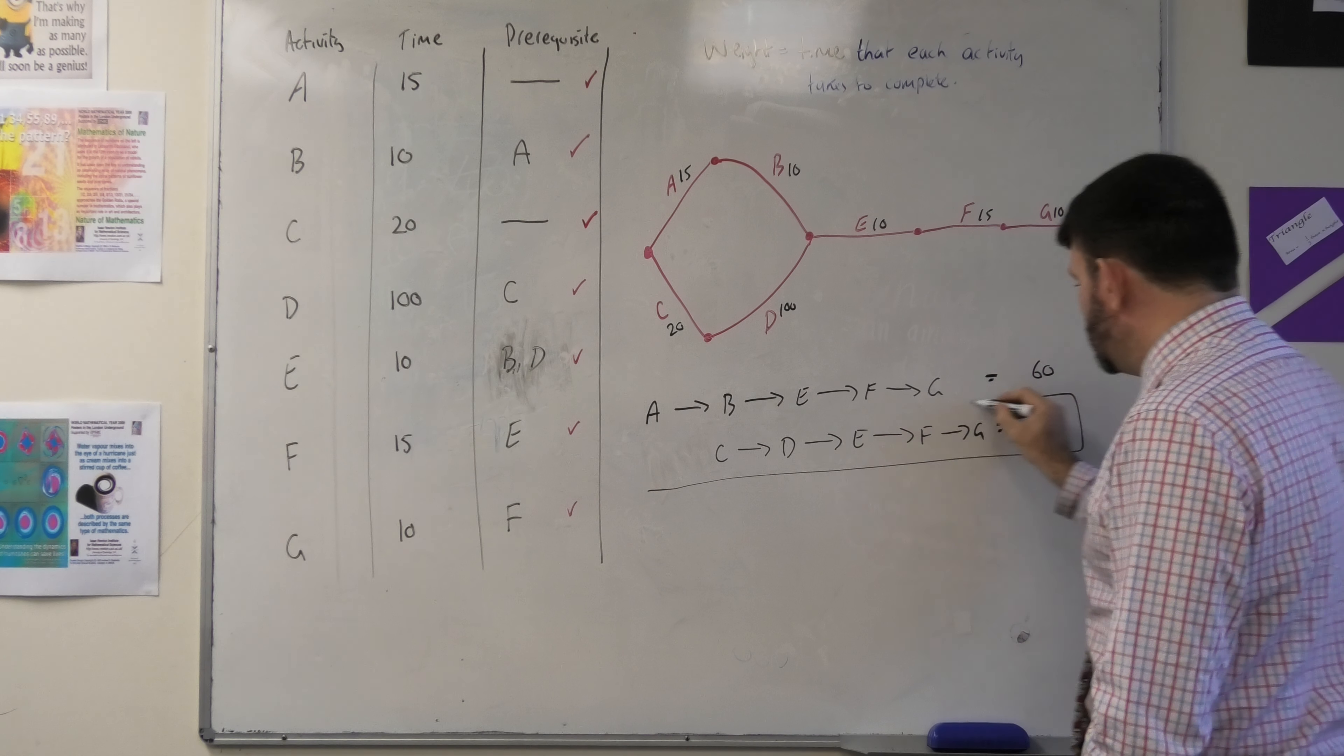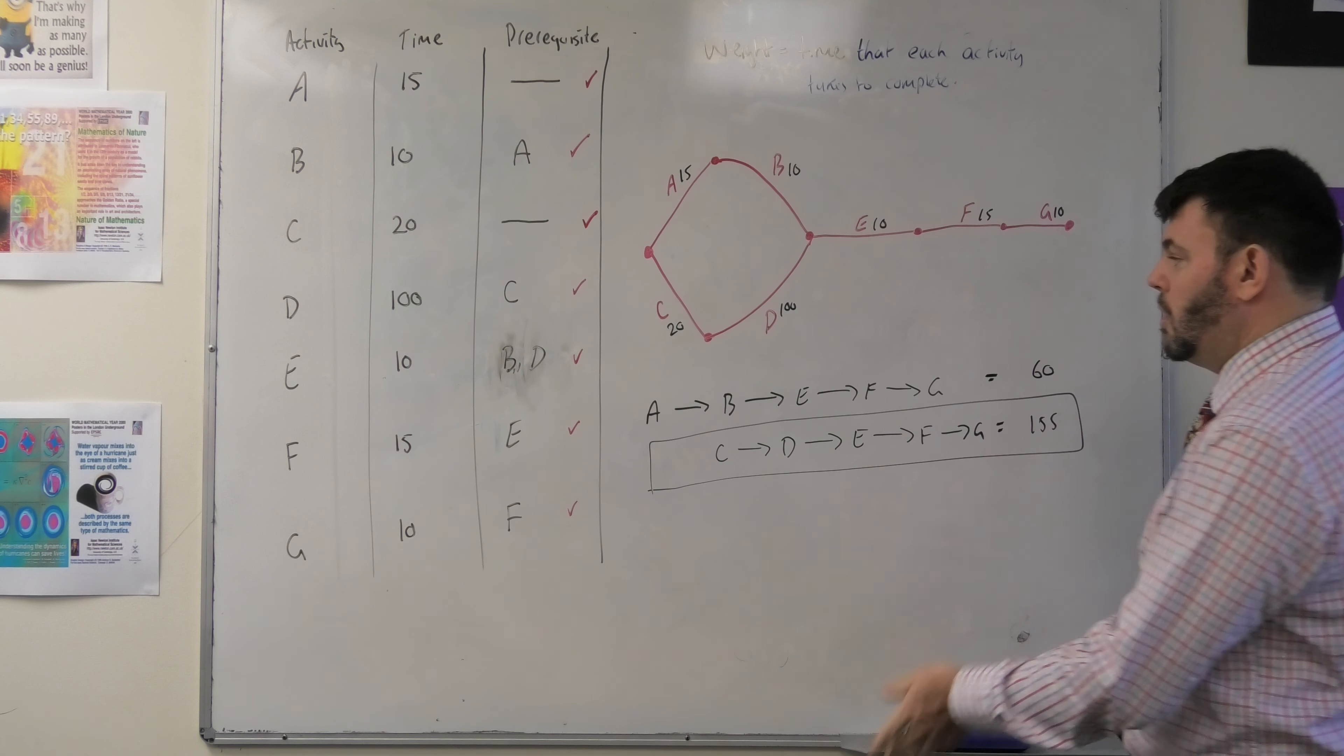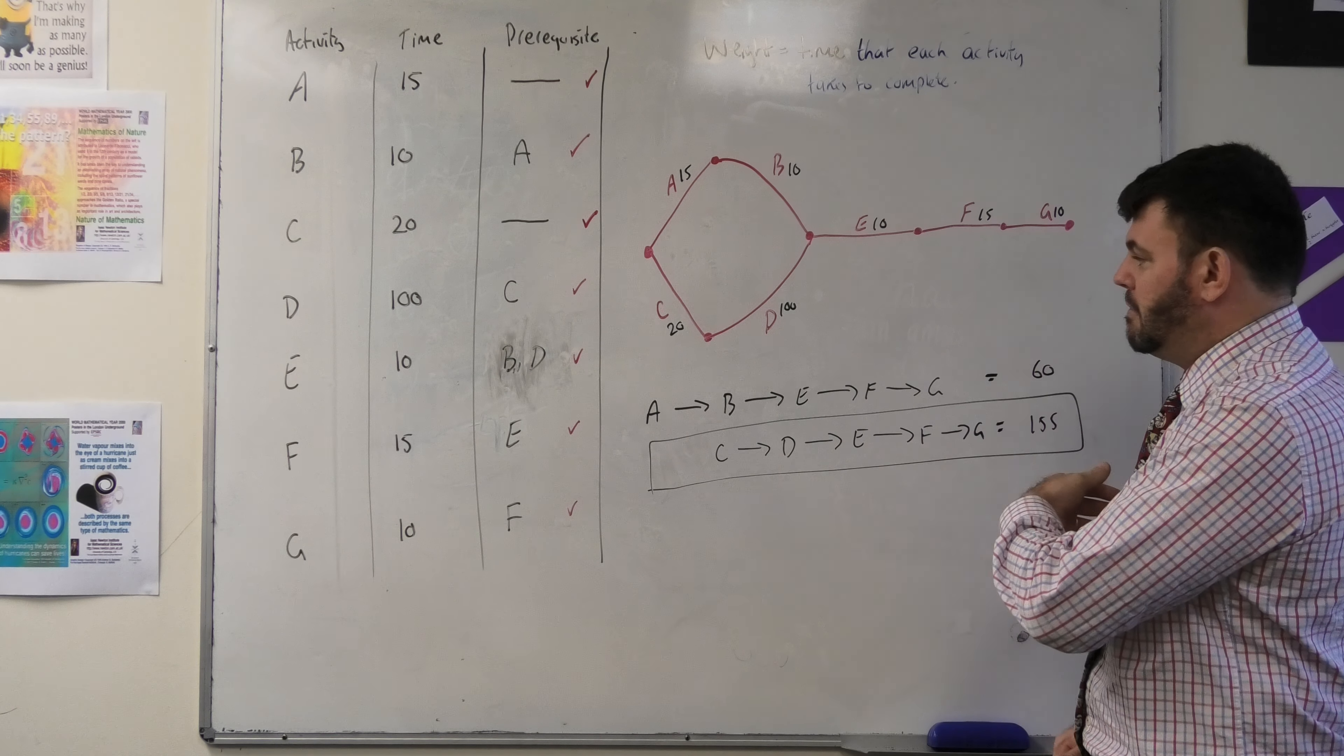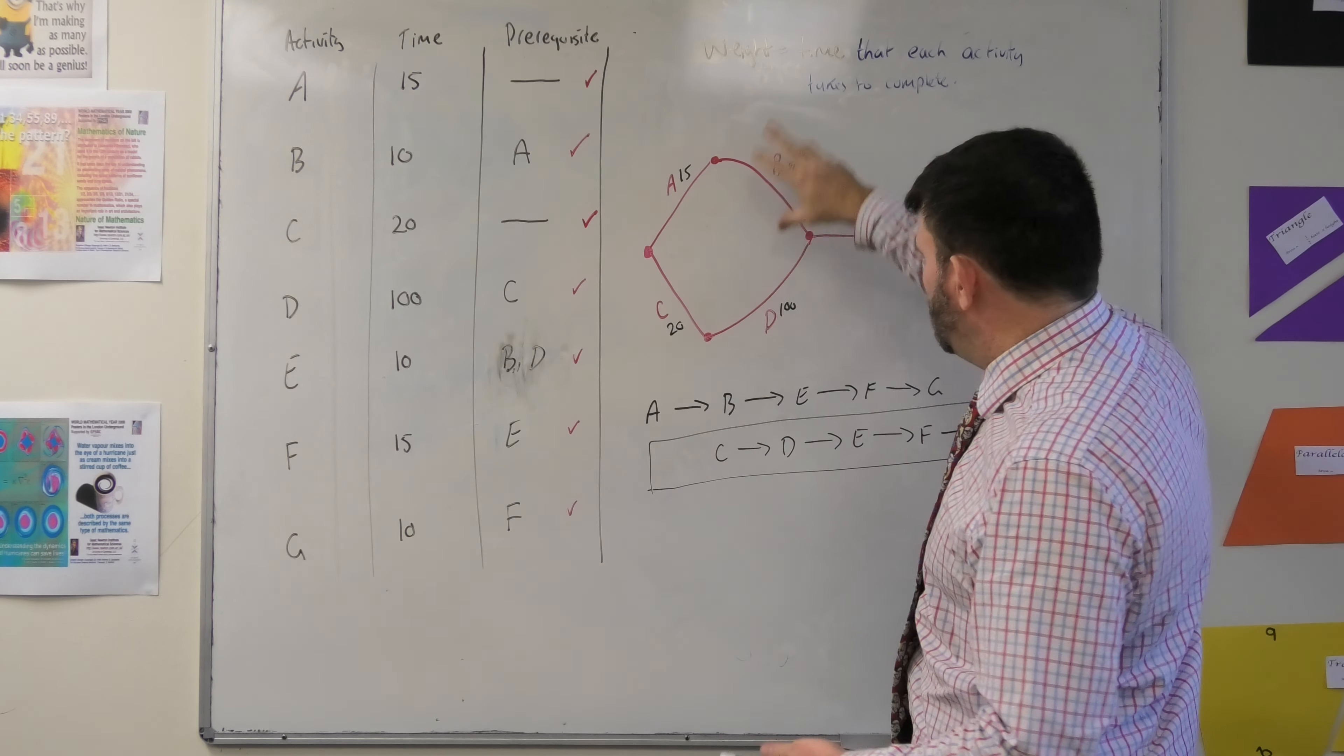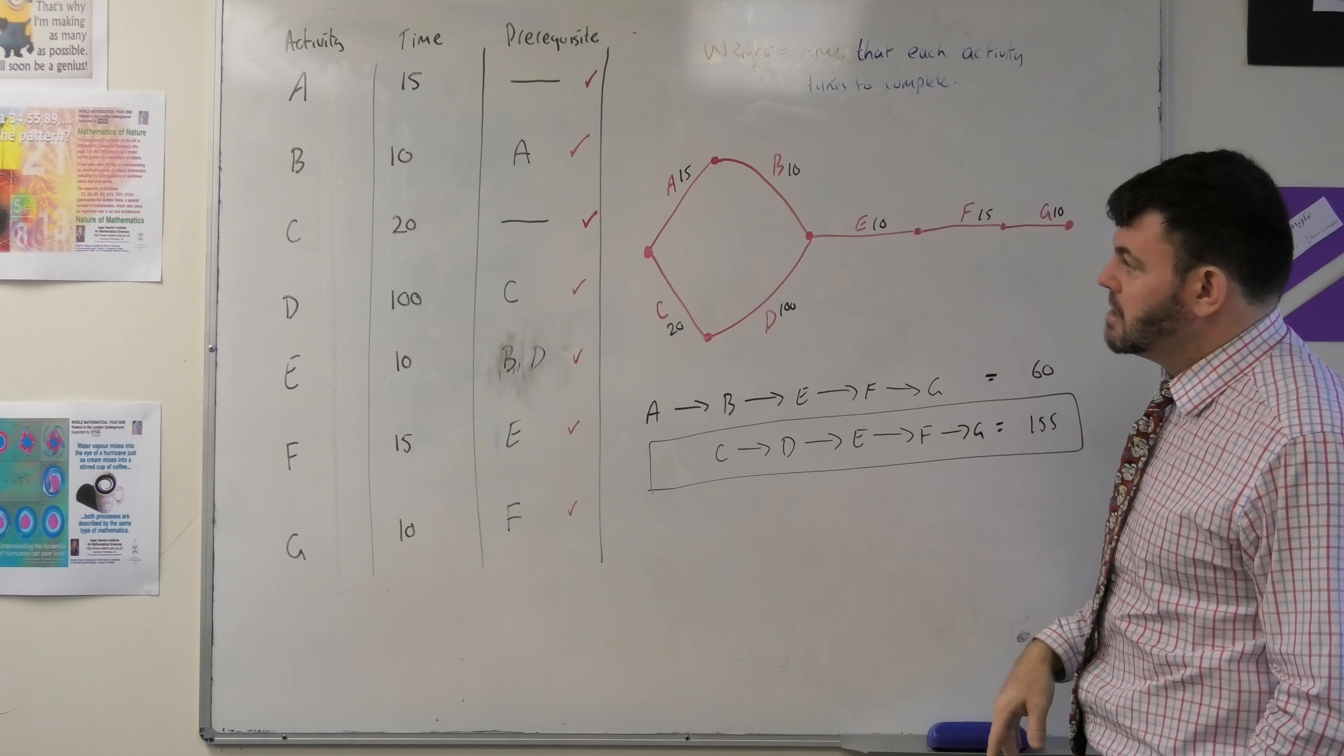So in this instance here, this would be your minimum completion time, where you follow C to D to E to F to G and 155 seconds. It doesn't really matter because A doesn't rely on anything and E is relying on both B and D, so you could use either B or D to move on to that next task.